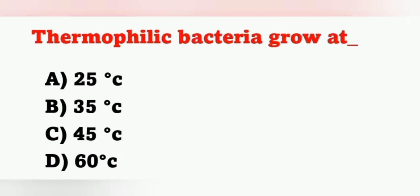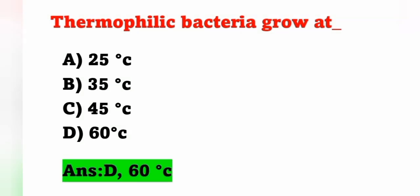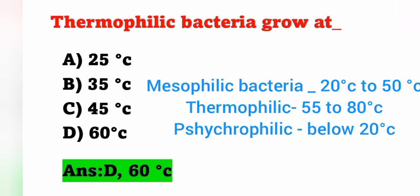Next question: thermophilic bacteria grow at — option A: 25°C, option B: 35°C, option C: 45°C, option D: 60°C. Thermophilic bacteria grow at about 60°C. Option D is the correct answer. Mesophilic bacteria grow between 20°C to 50°C, and thermophilic bacteria grow between 55°C to 80°C.